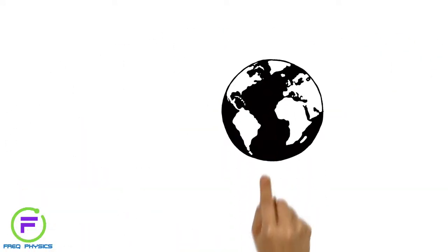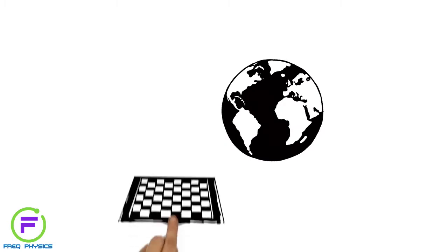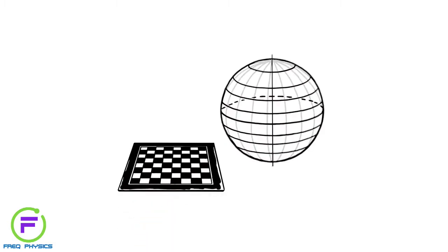The surface of the Earth can be divided like a chessboard, with lines of latitude and longitude.